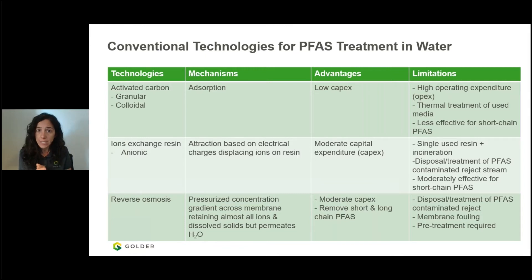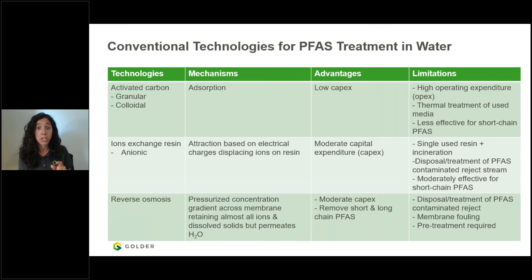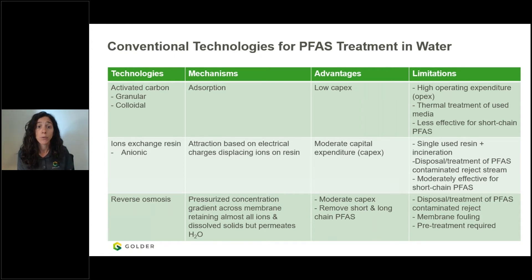The last conventional technology is reverse osmosis (RO). It works on a pressurized concentration gradient across a membrane to retain almost all ions and let only water pass. There is a moderate to high CAPEX depending on the application, and it can remove both short and long-chain PFAS. The limitation is disposal and treatment of a PFAS-contaminated liquid reject stream, which can be 20–50% of the incoming water volume. Membrane fouling and pre-treatment are often also required.